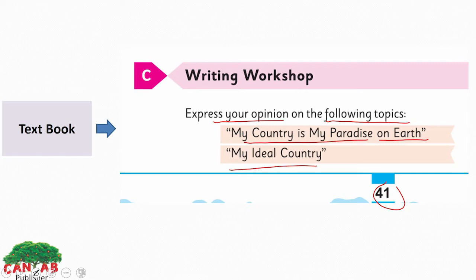We have read about Pakistan, so for 'My Country is My Paradise on Earth,' you have to support your ideas by giving details — why you think your country is your paradise on earth, what's so special about it. You have to write about the things you like and support your idea with the things you think make your country paradise on earth.